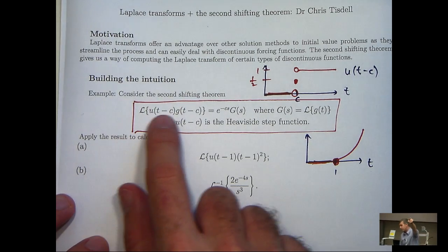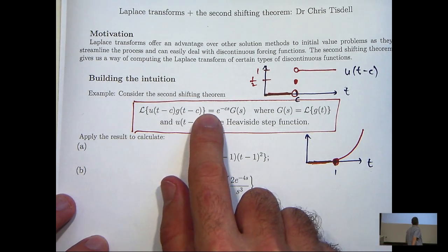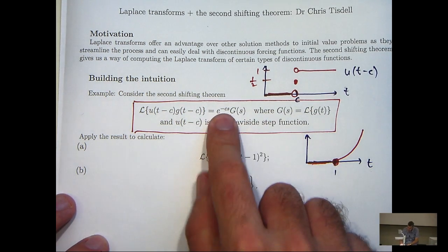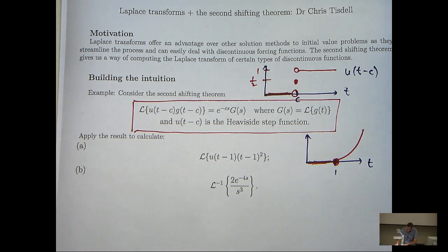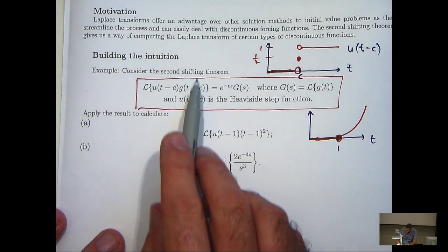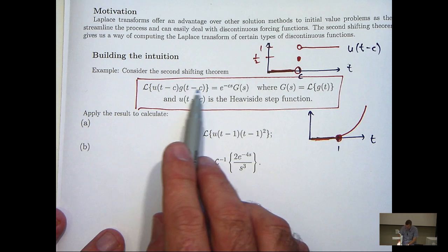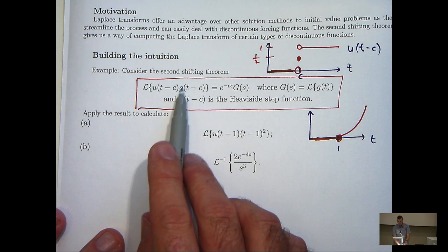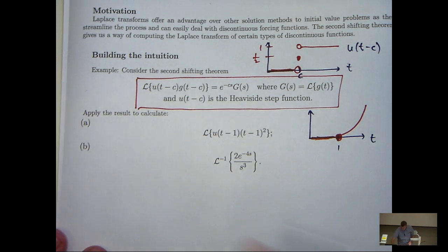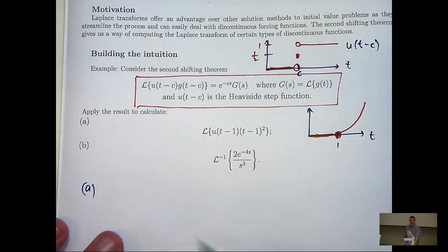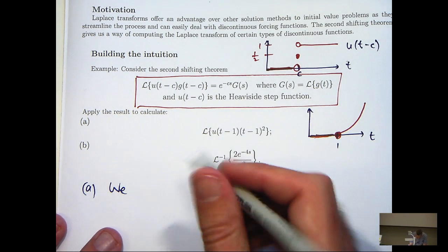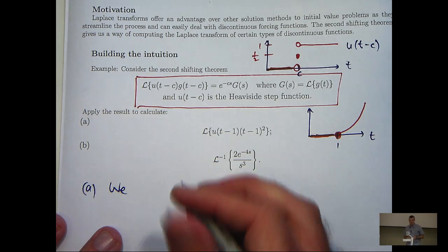Okay, so the second shifting theorem just says if we have this kind of product, then essentially what we do is we calculate the Laplace transform of little g of t to form big G of s, and then just multiply through by this exponential. So let's see how this works in practice. Now you can see here, before we get to that, the shift, there's a shift occurring here. G shifted. So this is where the shifting part of the second shifting theorem comes in. Okay, so what we're going to do is identify what's in here with what's up here and just identify c and g of t minus c.